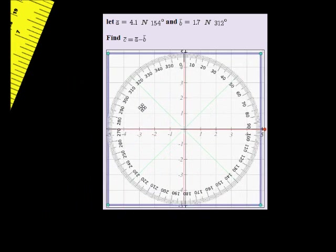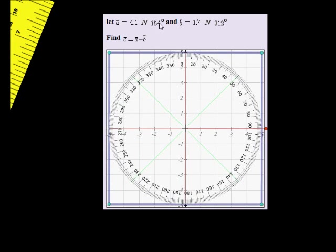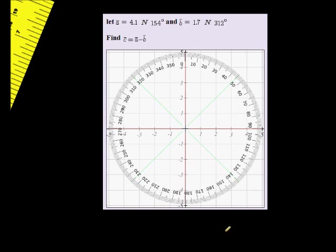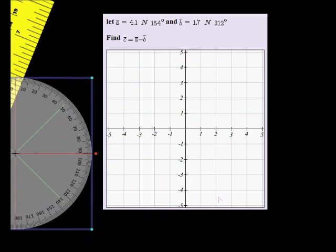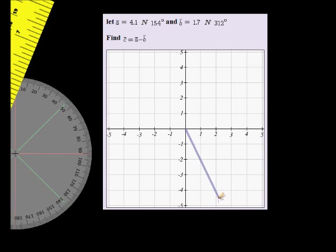A is easy to find. We simply plot it by taking 154 degrees. There is 154 right there, so right there we're going to make our little mark. Connect that with our thin pencil sketch from the center through that point.